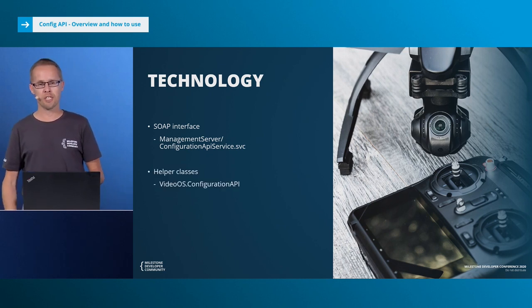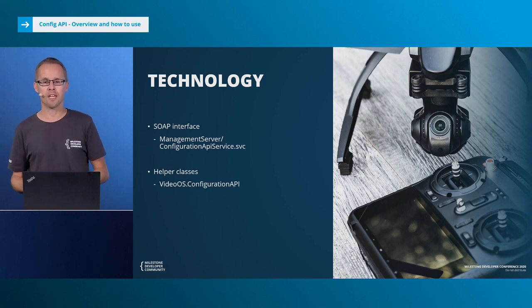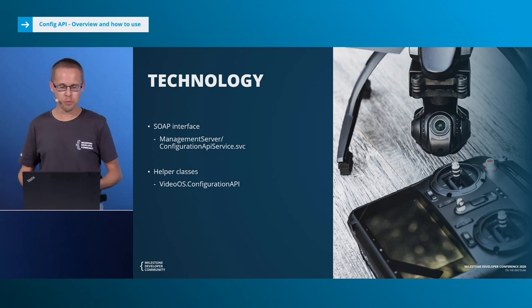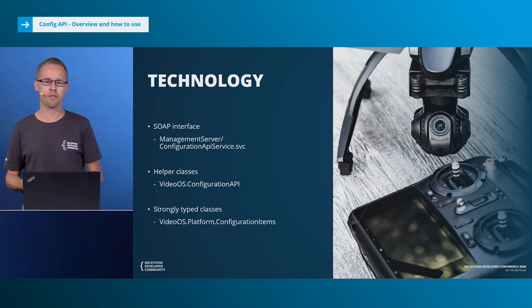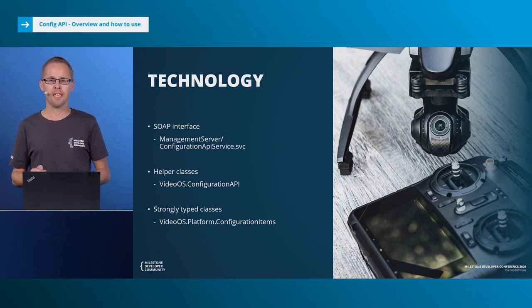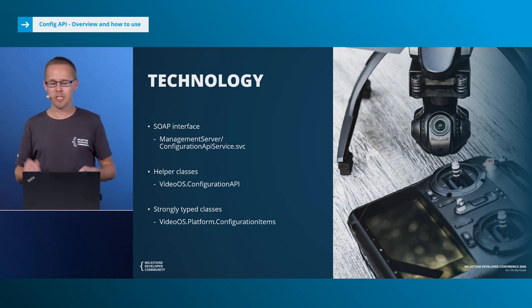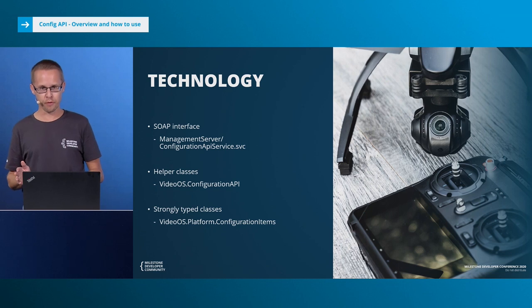We also have some helper classes in the VideoOS.ConfigurationAPI assembly. Those are not strictly necessary - you can actually do an entire application using the configuration API without using this DLL at all. But for some purposes it helps you a bit. Finally, we have a set of what we call strongly typed classes, which are basically a one-to-one class representation of the different types that are in the configuration API. If you are on the .NET platform and using the MIP SDK anyway, I strongly encourage you to use these configuration items instead of the more tedious raw configuration API. However, for this presentation I will focus on the raw configuration API.